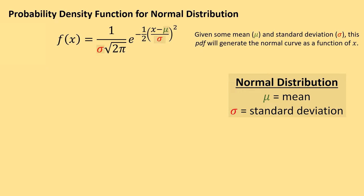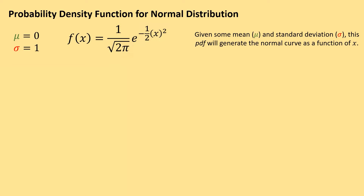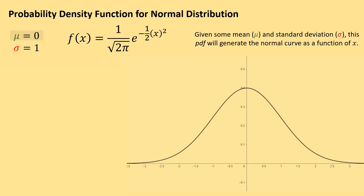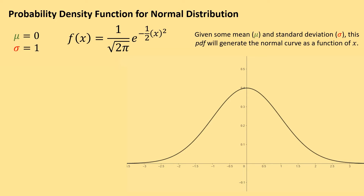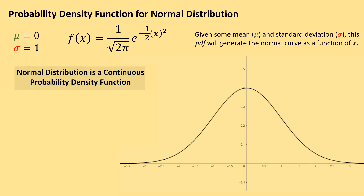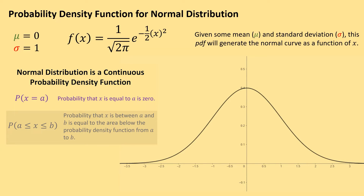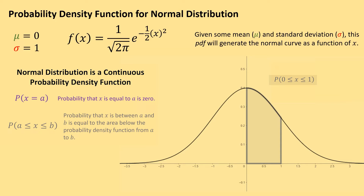Let's say that our mean is zero and our standard deviation is one. Plugging mu and sigma into the function gives us this, and graphing it produces a bell curve that splits the y-axis, since our mean is zero. The standard deviation defines the spread of our normal distribution. Now, the normal distribution represents a continuous probability density function. With continuous probability density functions, the probability at an individual point is always zero, but the probability of an interval equals the area underneath the curve within that interval.